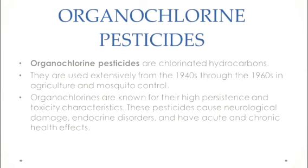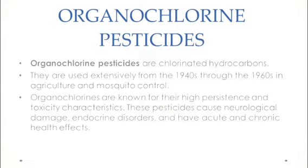Organochlorine pesticides are chlorinated hydrocarbons, meaning these pesticides are made up of hydrocarbons and contain chlorine. They were used extensively from the 1940s through the 1960s for agricultural purposes and for mosquito control.